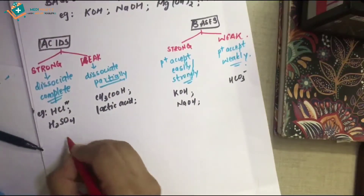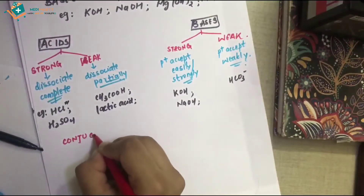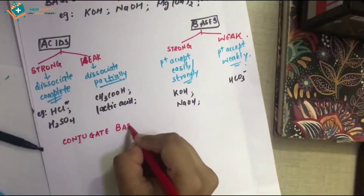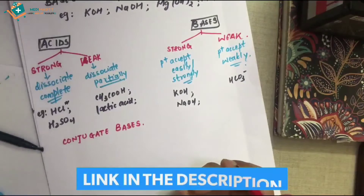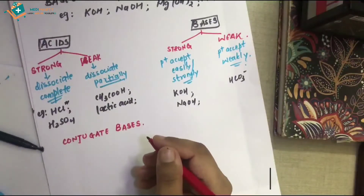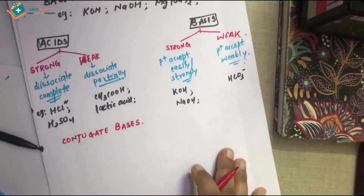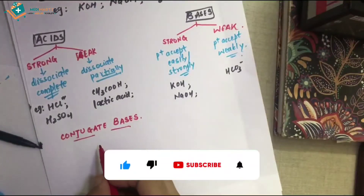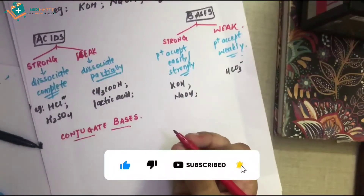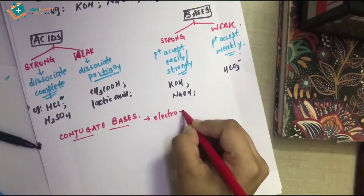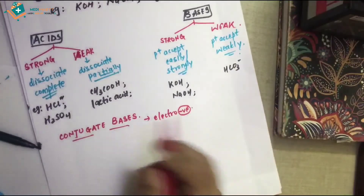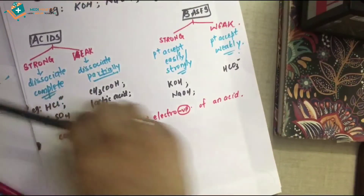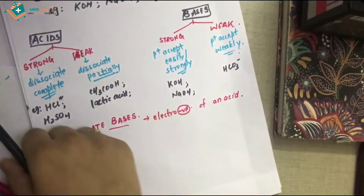Now we will study about the conjugate base, which you have likely already studied in your 11th and 12th standard. Basically, what is a conjugate base? It is the electronegative part of an acid. I'm writing this here for your understanding and retention.